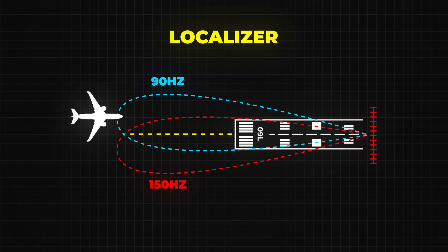If the aircraft is flying too far to one side, the instruments in the cockpit detect this and tell the pilot to correct the course until they're centered.